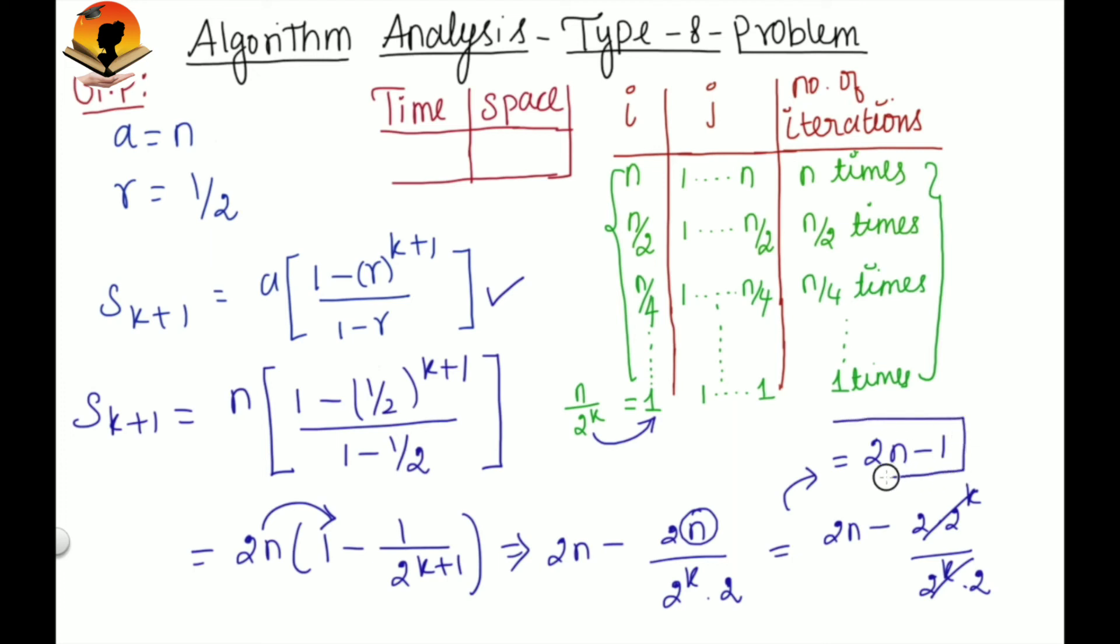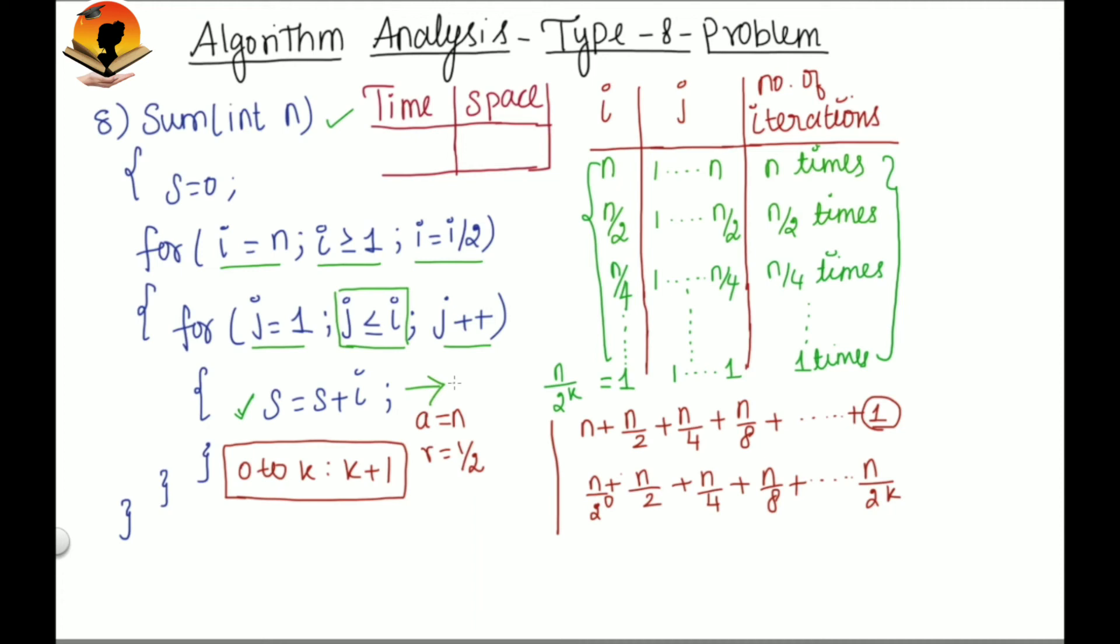Therefore, this is the total number of iterations. So the time unit for this statement is 2n minus 1. And this statement takes 1 unit of time because it will be executed only once. So the total time unit is 2n minus 1 plus 1. You can ignore the constant values. So the time complexity for this problem is order of n.